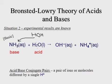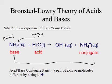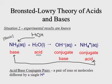For the conjugate pairs in this example: NH₃ and NH₄+ form one pair — NH₃ was the base, so NH₄+ is the conjugate acid. Water (H₂O) and OH⁻ form the other pair — water was the acid, so OH⁻ is the conjugate base.